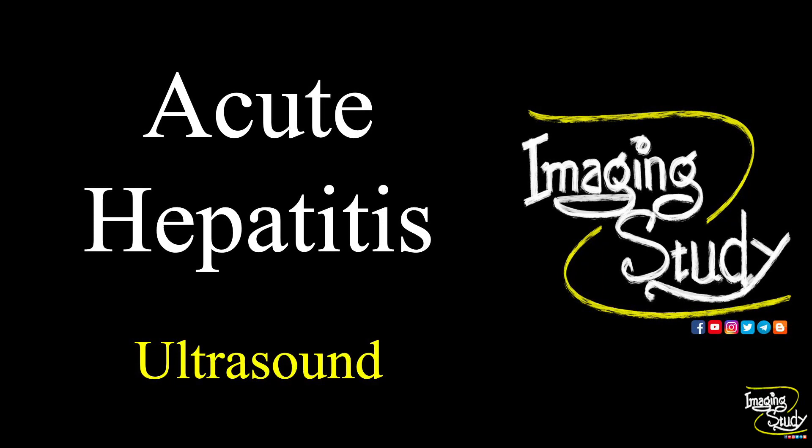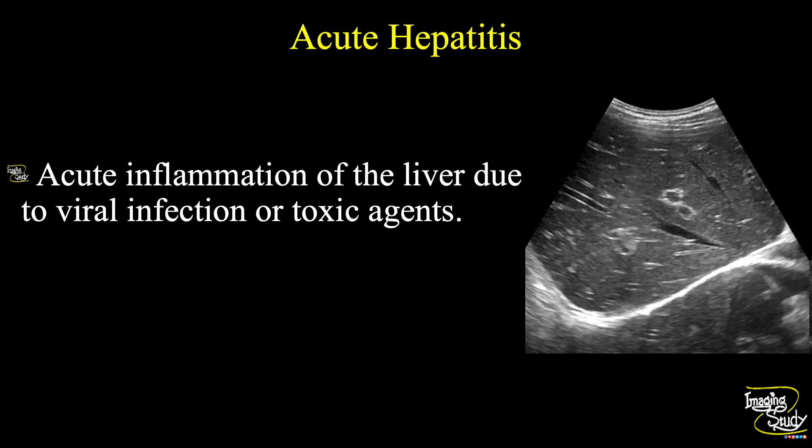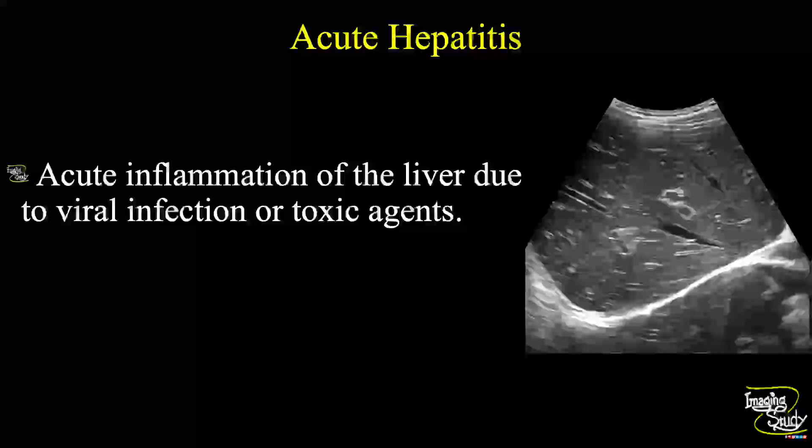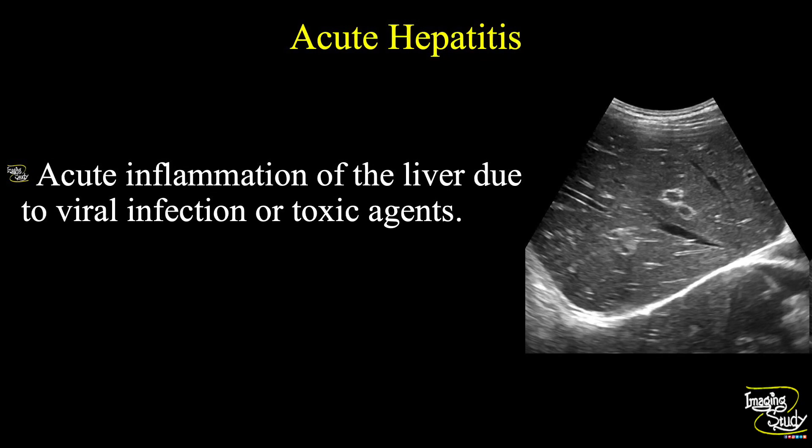Acute hepatitis is the acute inflammatory condition of the liver due to viral infection or toxic agents. The patient will come with jaundice, fever, and right hypochondriac pain, and may also present with nausea and vomiting.